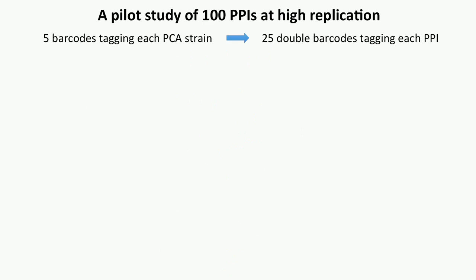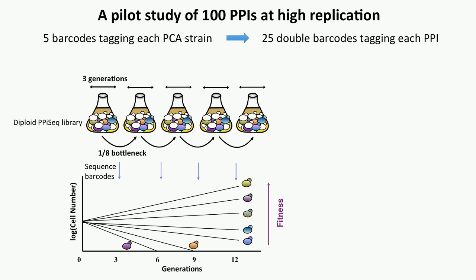To test our idea, we did a pilot study covering 100 protein-protein interactions, including some positive and some negative interactions. We used five barcodes to tag each PCA strain, giving 25 double barcodes per protein-protein interaction. Once we built this library, we grew them with serial batch transfers — three generations per flask — for 12 generations total. At every three generations we sequenced the barcodes to get the double barcode frequency at each time point. Based on this data we can estimate the fitness for each lineage, where fitness represents the number of complete DHFR molecules in the cell and essentially measures the number of protein-protein interactions.